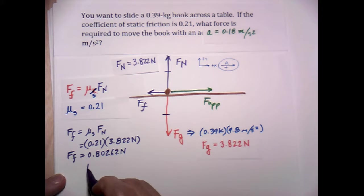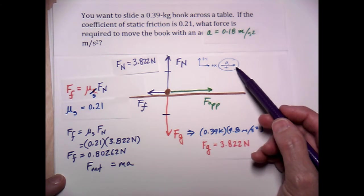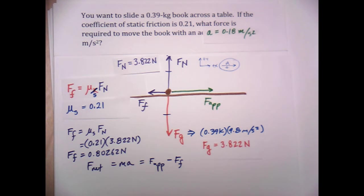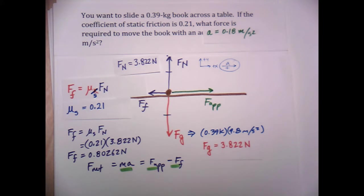And so since F net is equal to ma, and we know that the net force and the acceleration are in the positive x or in the right-hand direction, we can use the arrows to tell us how to set up this equation. So let's go ahead and write out that F net equals ma, which is equal to the applied force minus, because these arrows are pointing in the opposite direction, the frictional force. What we have here is Newton's second law written in a way that we can now solve.